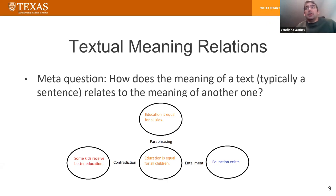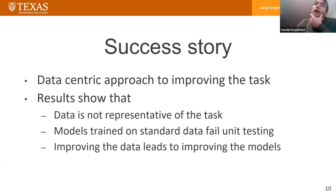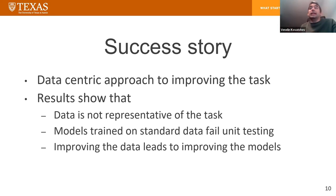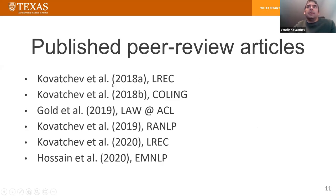My approach to that was strictly data-centric. I tried to analyze and improve the existing benchmarks and data for automatic detection of textual meaning relations. I showed empirically, through multiple experiments, that the data is not representative of the task — there are many flaws in it. Models trained on standard data can fail unit testing and have biases in them. And finally, I demonstrated that by improving the data, we can improve the models and get closer to what we really want: understanding human language by machines.